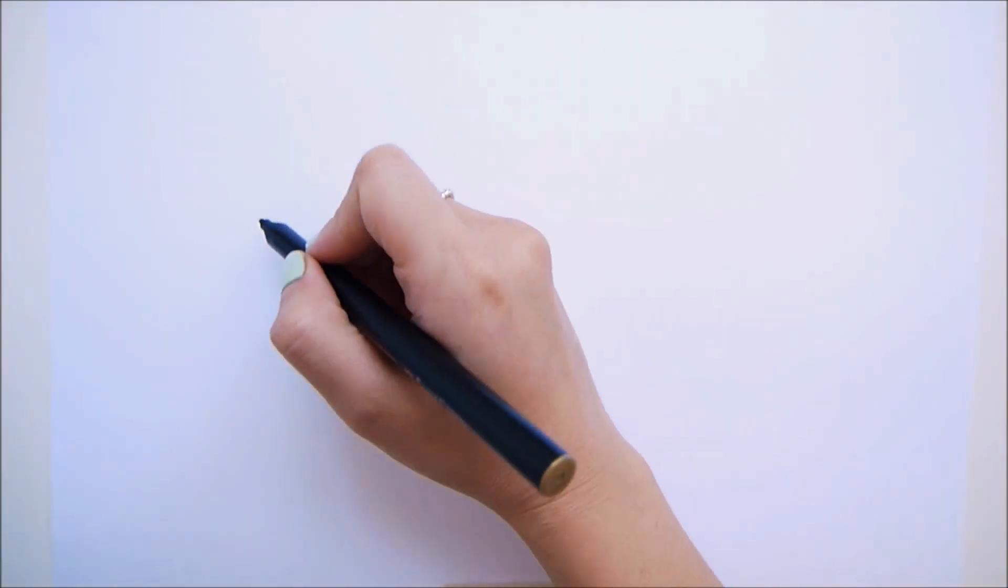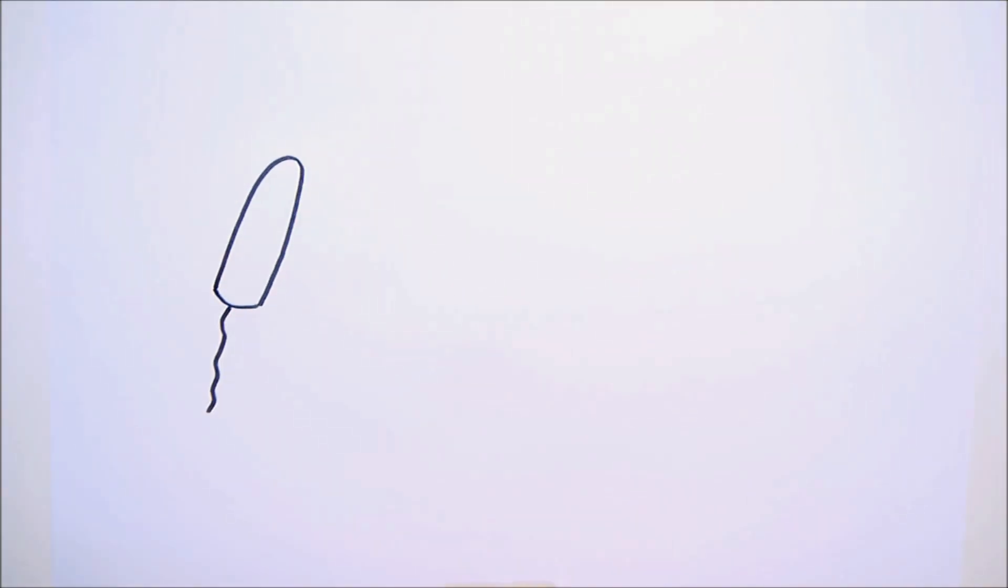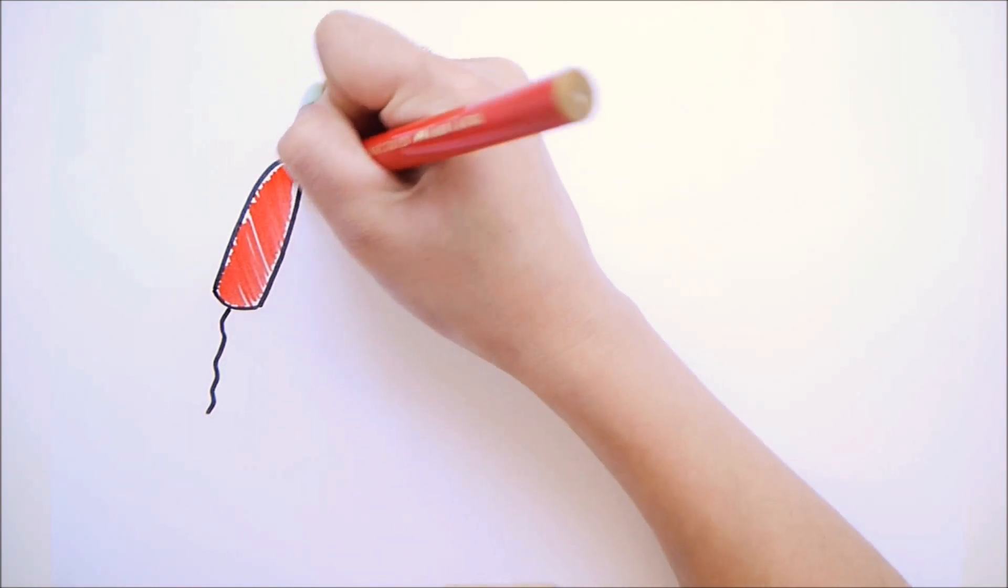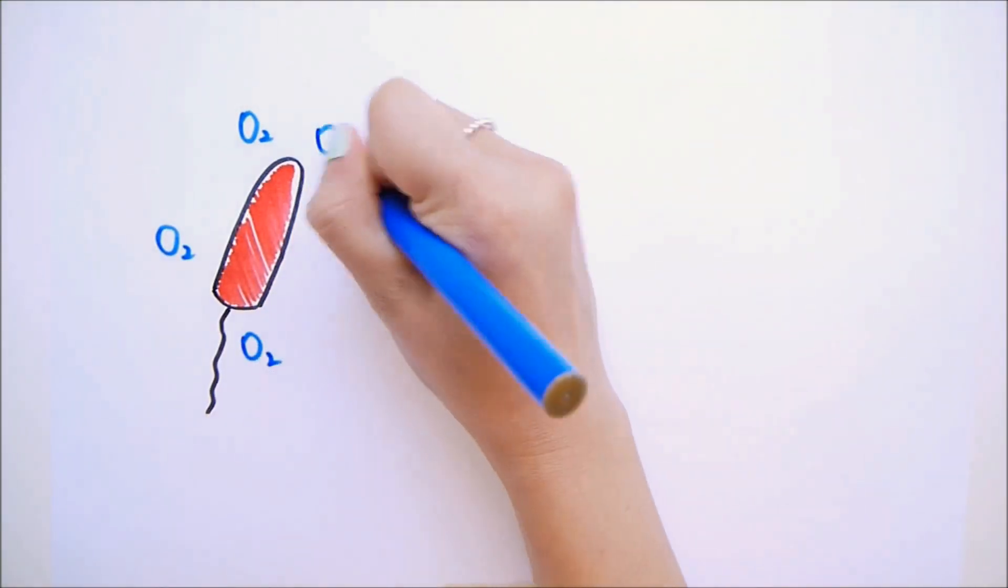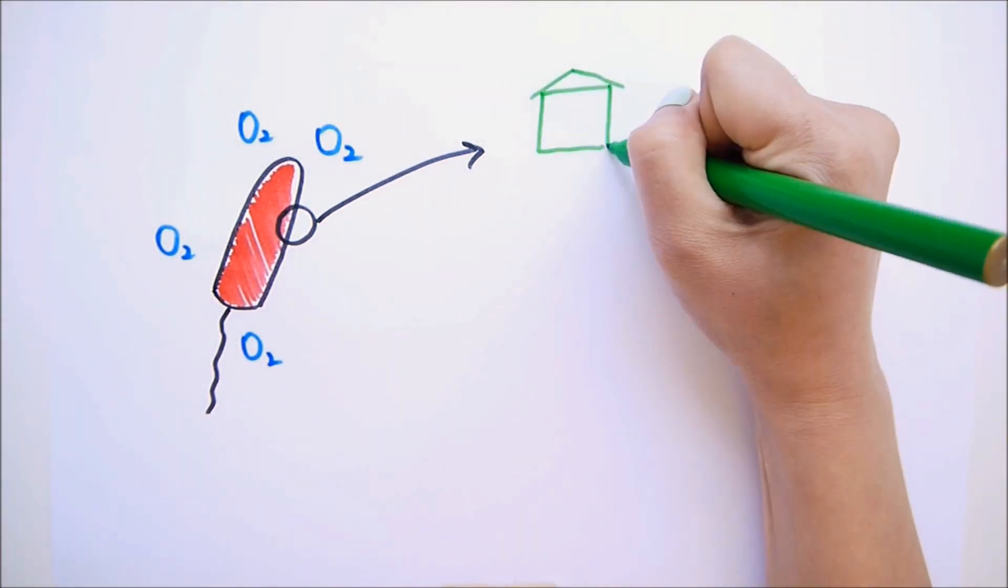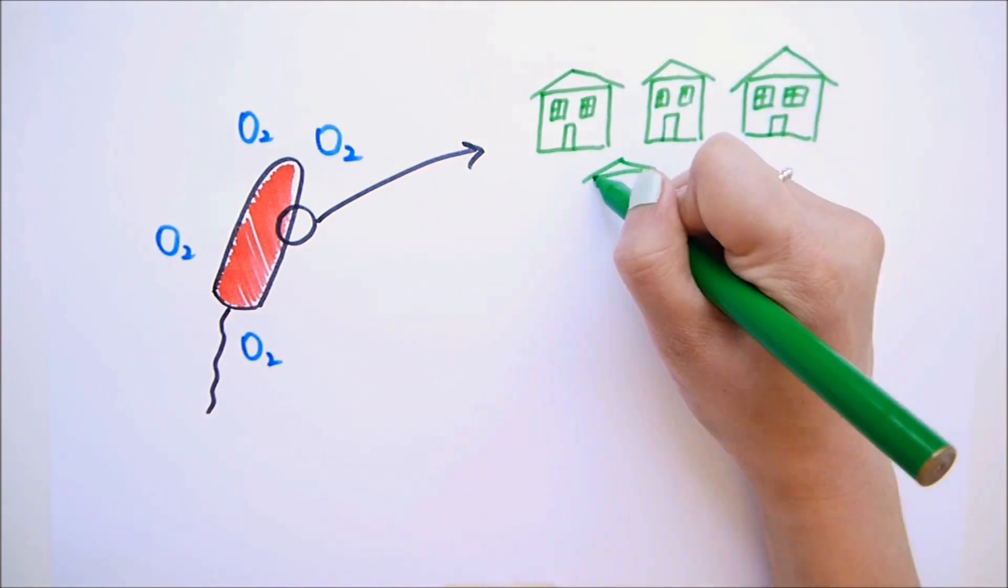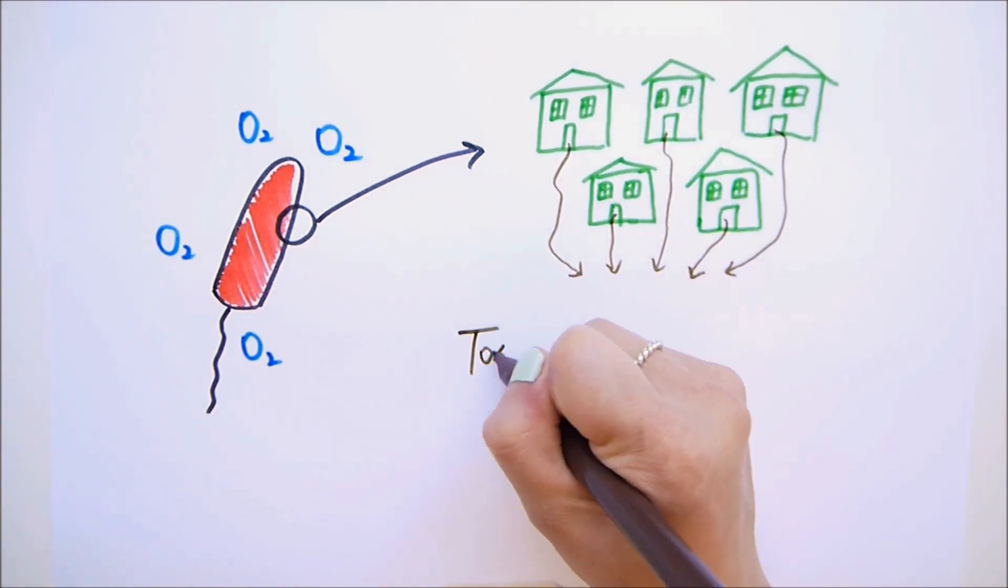But if a tampon is left in too long, it can actually make it quite comfortable for the nasty bacteria to live in because of the chemical composition of the tampon—we don't know why—and increasing the amount of oxygen in the vagina. And they can build a home, multiply, and start producing a toxin called Toxic Shock Syndrome Toxin 1.